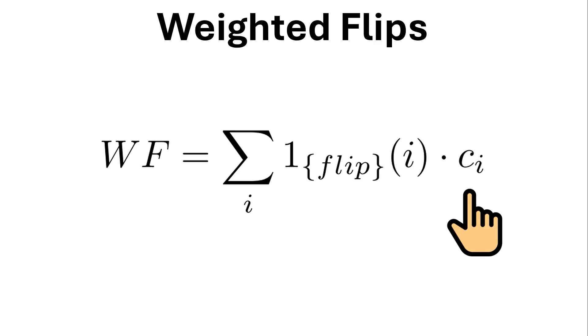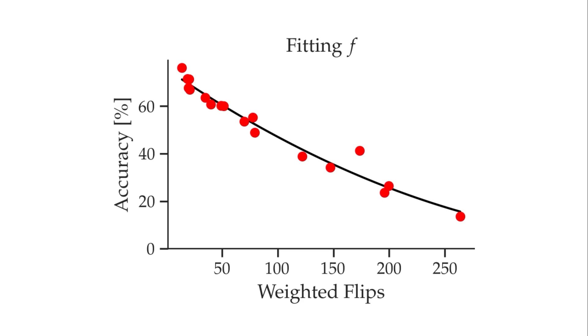And once they measure these weighted flips for different datasets, they plot this figure that on x-axis we can see the weighted flips and on y-axis the actual accuracy that we can get by leveraging the ground truth labels. And then they decided to fit a function f that given the weighted flips as input, we could estimate the accuracy as the output. And this is the function they got eventually, that given x which is the weighted flips as input, we can get accuracy as output.